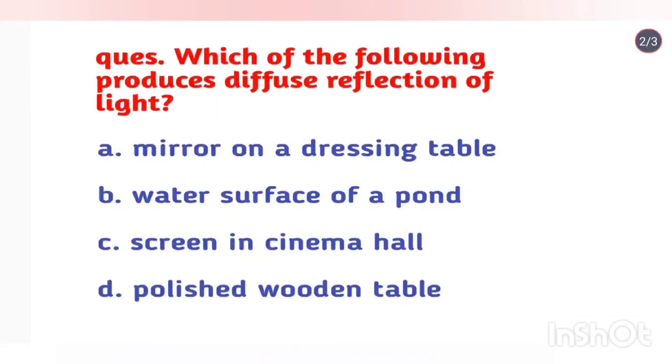Which of the following produces diffuse reflection of light? Right answer is screen in cinema hall. Screen in a cinema hall produces diffuse reflection of light. When light incidences on smooth surface, the light is reflected in one direction as parallel beam. This is why our eyes cannot view the reflection from mirror, water, and polished wood directly. When the light incidences on rough surface, the light is reflected in many directions. So in cinema hall, the screen is designed as rough and irregular surface.